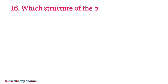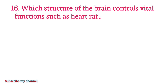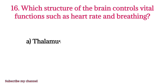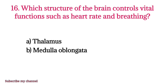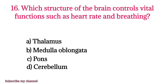MCQ number sixteen: Which structure of the brain controls vital functions such as heart rate and breathing? Option A: thalamus, option B: medulla oblongata, option C: pons, option D: cerebrum. The right option is option B.